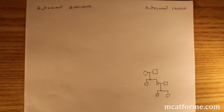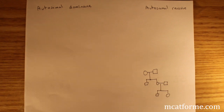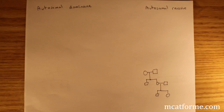Today we're going to be doing a quick lecture on inheritance patterns or inheritance trends. So if you were given a pedigree, we would have to determine whether or not it's autosomal dominant, recessive, mitochondrial, Y-linked, X-linked recessive, or X-linked dominant. We're going to go through some of the key points to determine which one.